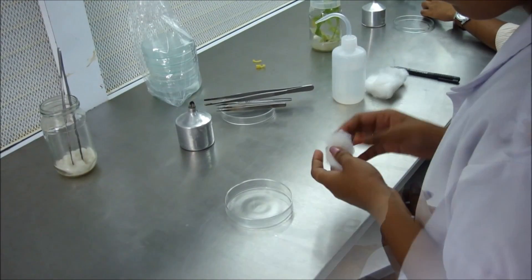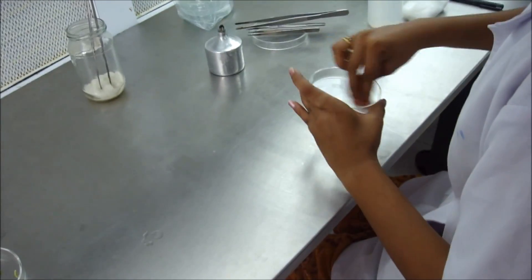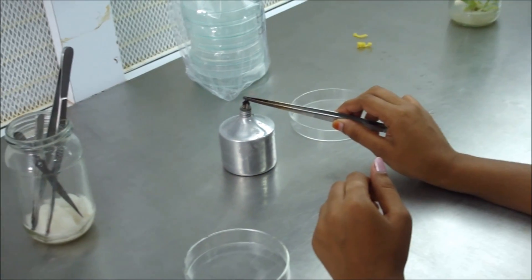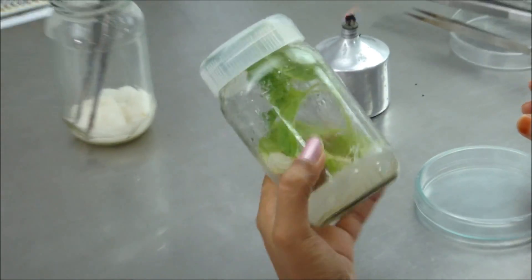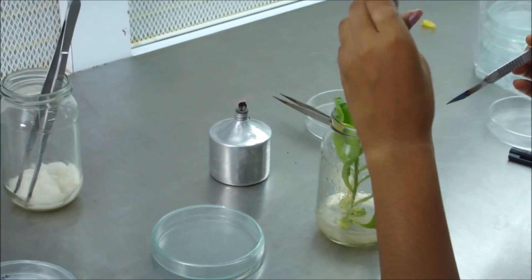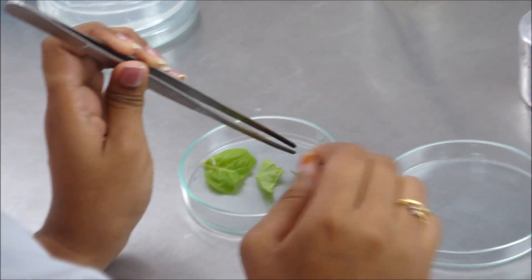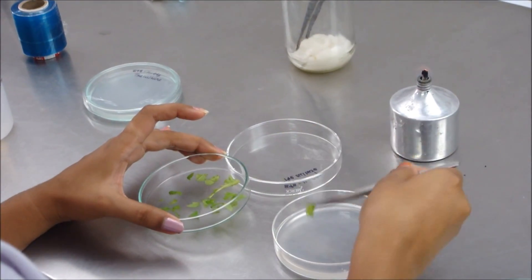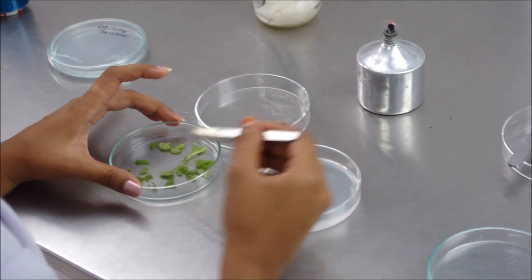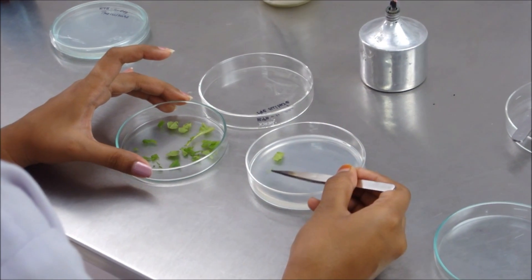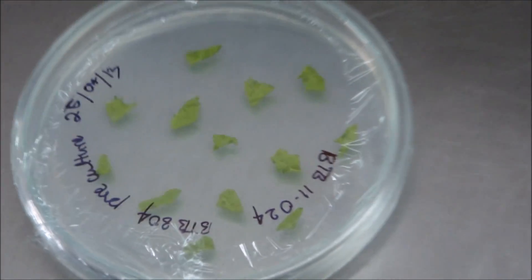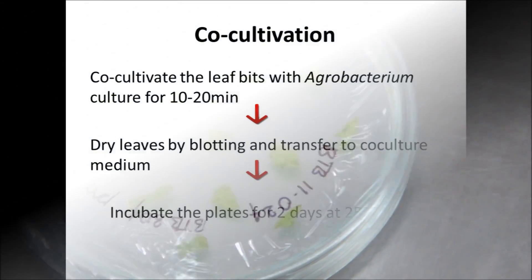The work area and the tissue culture wares are first cleaned with 70% ethanol as a process of sterilization. A healthy tobacco plant is chosen and a leaf is then carefully cut from the plant. It is then cut into smaller leaf bits, carefully placed on the preculture medium with the lower epidermis facing up, and incubated for 2 days at 25 degrees Celsius.